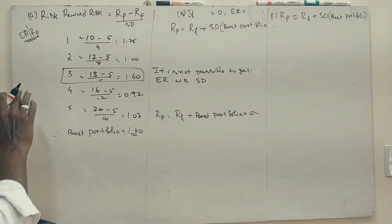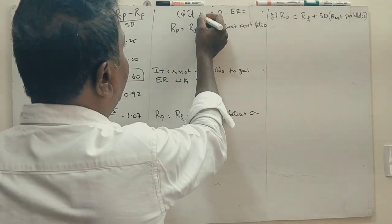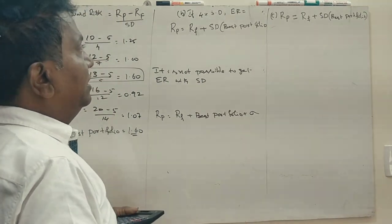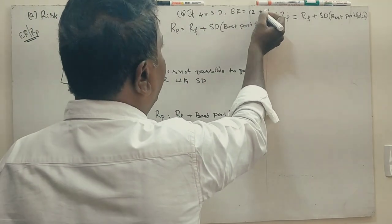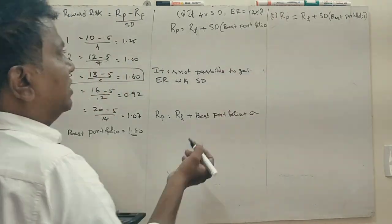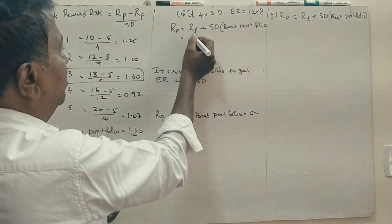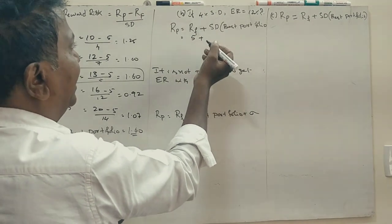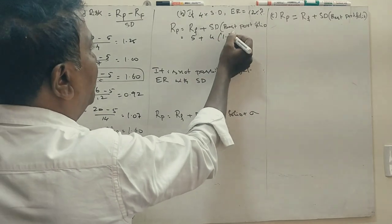It is the answer to the first question. If standard deviation is 4%, expected return is... that is 1.60. So risk-free return is 5%, standard deviation 4%, best portfolio is 1.60.